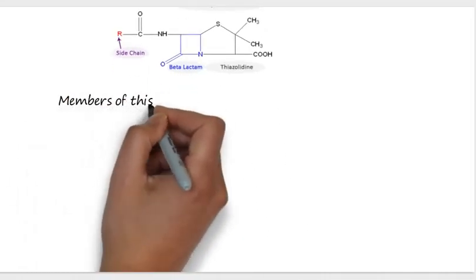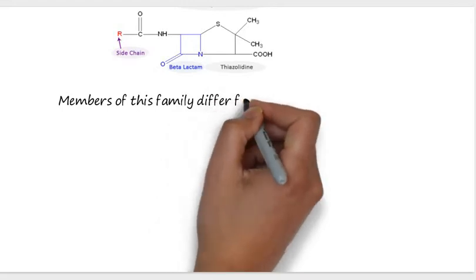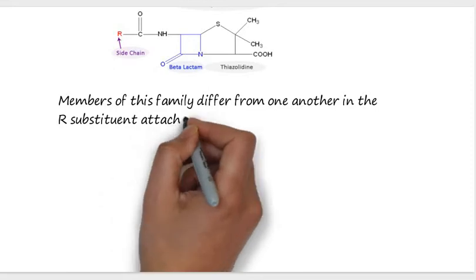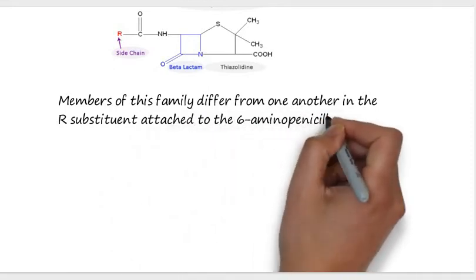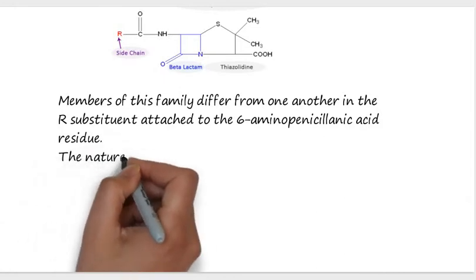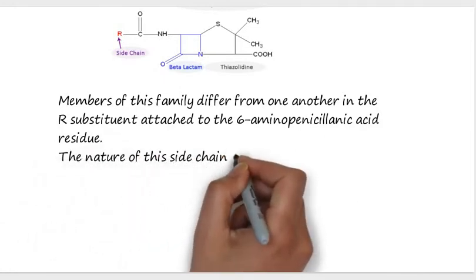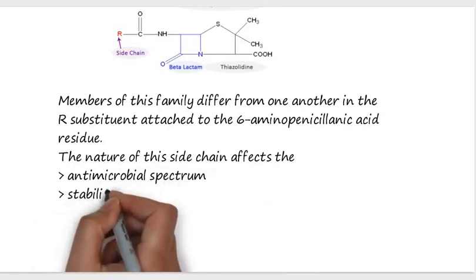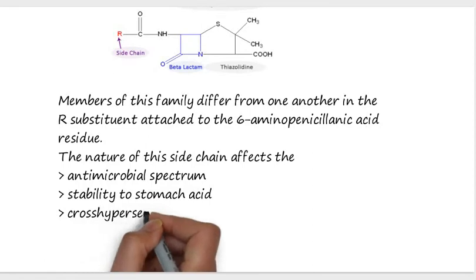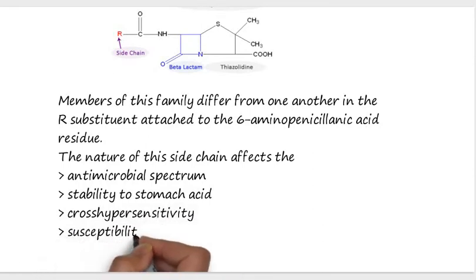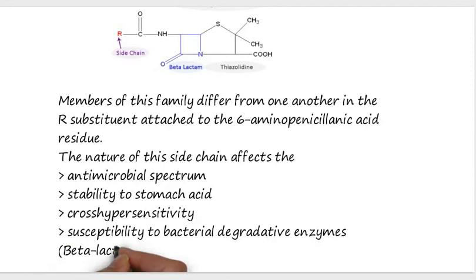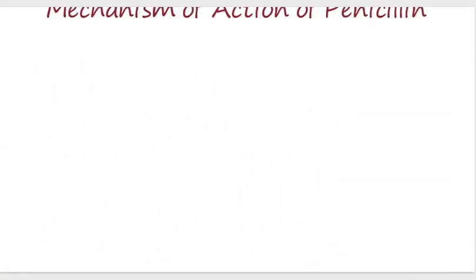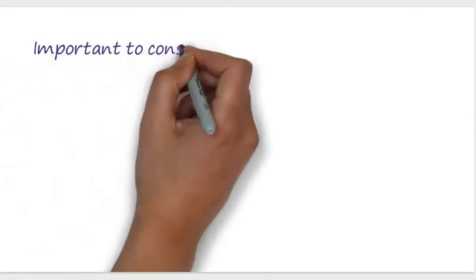Members of this family differ from one another in the R-substituent attached to the 6-aminopenicillanic acid group. The nature of this side chain affects the antimicrobial spectrum, stability to stomach acid, hypersensitivity, and susceptibility towards bacterial degradative enzymes known as beta-lactamase.